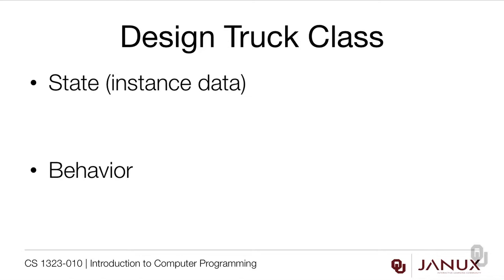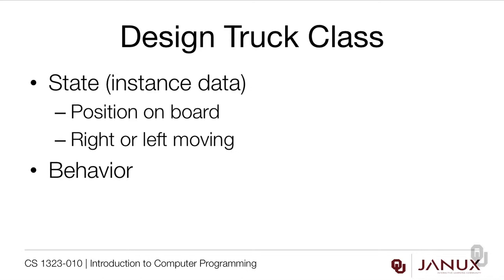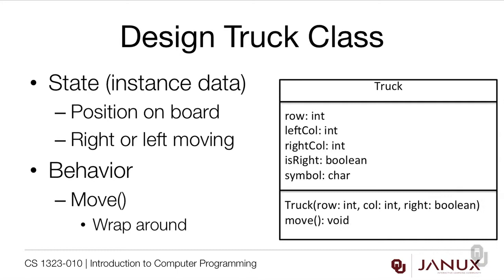Now the next thing we need to do is design our Truck class. The truck's state is the position on the board — row and column — and whether it moves right or left. Remember that in Frogger once a truck starts moving in one direction it keeps moving in that direction. The behavior is actually really simple: it just needs to move. Now the trucks looked better if they were a little bit bigger than the frog, so I made them sit on two consecutive columns — the right column and the left column in a given row. I also needed to track whether they were going right or left, which is what 'isRight' does.